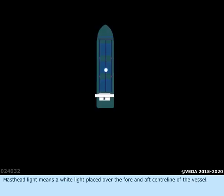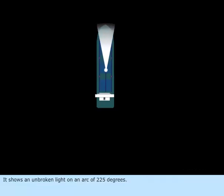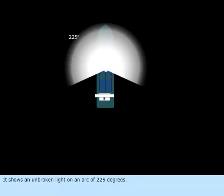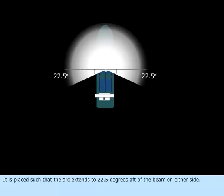Mast headlight means a white light placed over the fore and aft centerline of the vessel. It shows an unbroken light on an arc of 225 degrees. It is placed such that the arc extends to 22.5 degrees aft of the beam on either side.